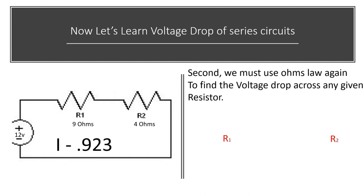Second, we must use Ohm's Law again to find the voltage drop across any given resistor. Voltage drop is equal to R1 multiplied by I, and voltage drop of resistor 2 is equal to that resistor multiplied by I. Because we're trying to find the voltage drop, E equals IR. Just plug in the knowns. We know the I and we know the resistance, and we're looking for the voltage drop. So we just multiply those two together.